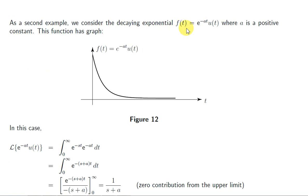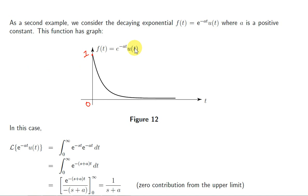Let's look at the decaying exponential function, e to the power of minus at times u(t), where a is positive. Here's the graph of e to the power of minus at — a is a positive constant. When t is 0, this function is actually 1, since e to the power of 0 is 1. We can forget about the u(t) because u(t) equals 1 here; we're just looking at this part of the exponential.